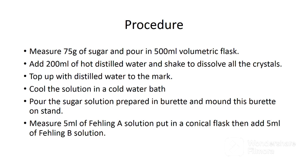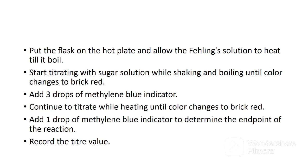Measure 75 grams of sugar and pour into a 500 ml volumetric flask. Add 200 ml of hot distilled water and shake to dissolve all the crystals. After dissolving, top up to the mark with distilled water and cool the solution in a cold water bath. Pour the sugar solution into a burette and mount the burette on the stand. Measure 5 ml of Fehling Solution A and 5 ml of Fehling Solution B into a conical flask. Place the conical flask on the hot plate and allow the Fehling solution to heat until it boils. Start titrating with the sugar solution while shaking and boiling until the color changes to brick red.